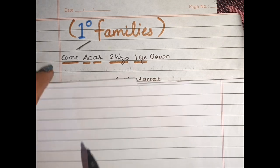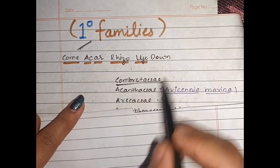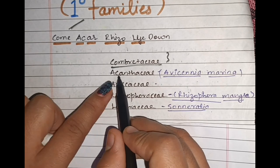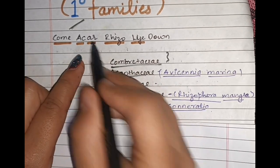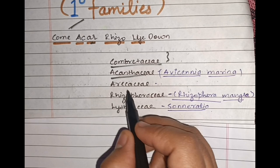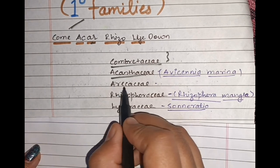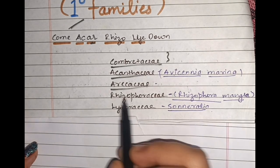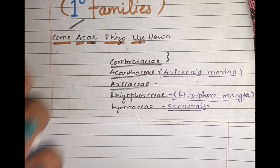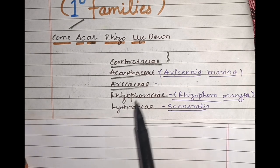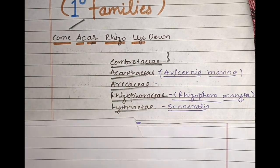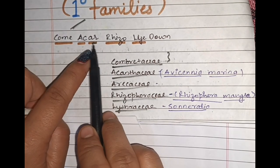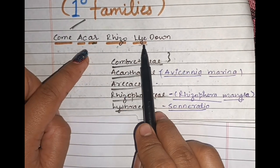Trick ke saath chalte hain: 'come' word se hum yaad karenge Combretaceae; 'ac' from 'acre' stands for Acanthaceae; 'ar' from 'acre' se hum yaad karenge Arecaceae; 'riso' stands for Rhizophoraceae; and 'lie down' ke liye hum use karte hain Lythraceae. Toh ek baar phir: Combretaceae, Acanthaceae, Arecaceae, Rhizophoraceae, and Lythraceae.